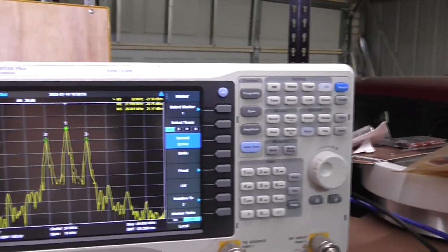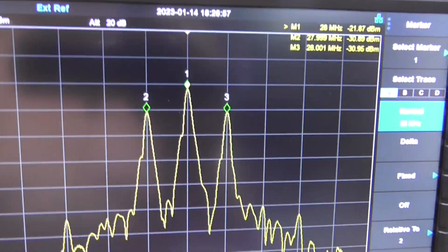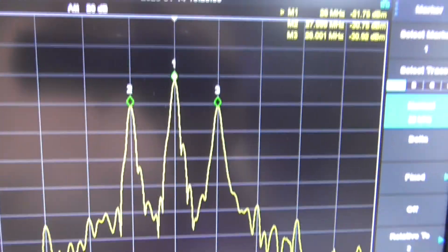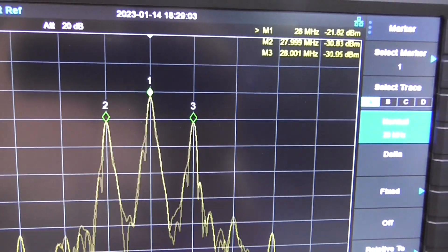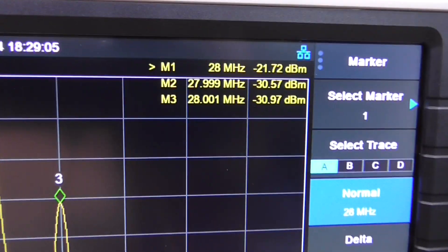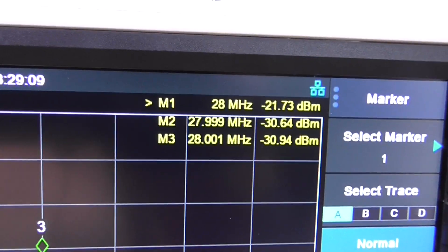We come over to the new spectrum analyzer and have a look. There we are - we have the fundamental frequency, point number one, and two and three are the sidebands. Up in the corner there you can see sidebands and fundamental frequency.